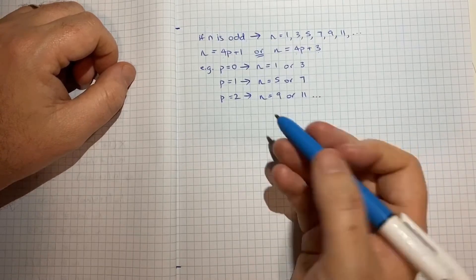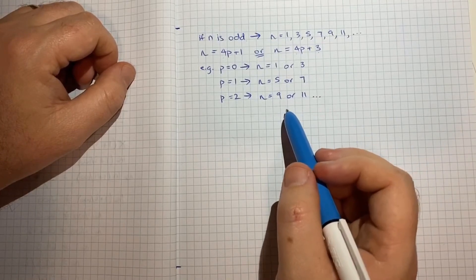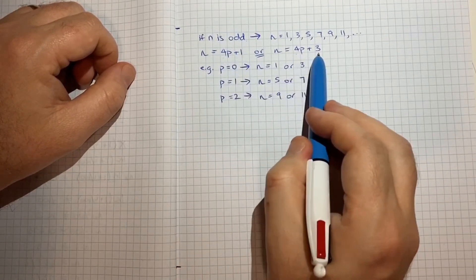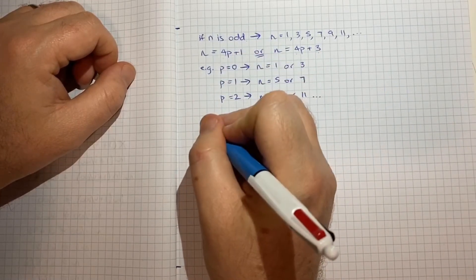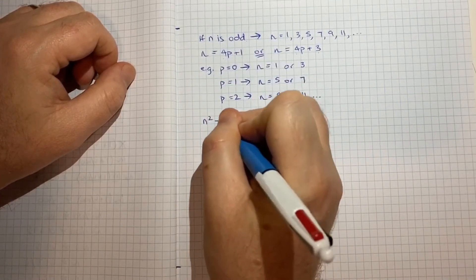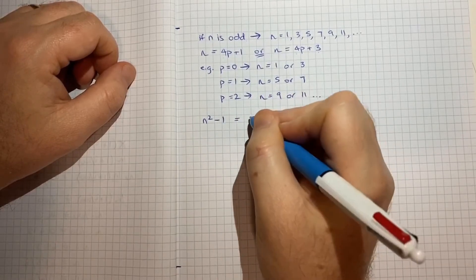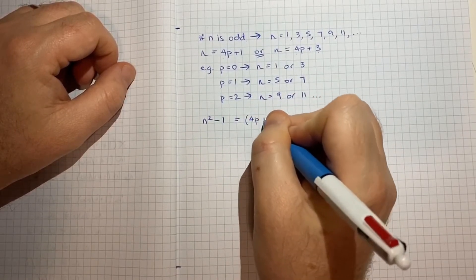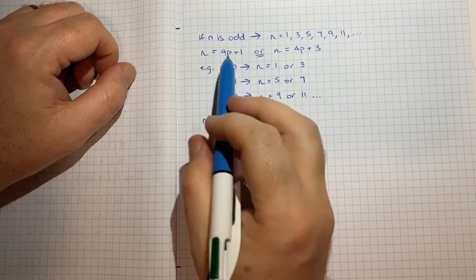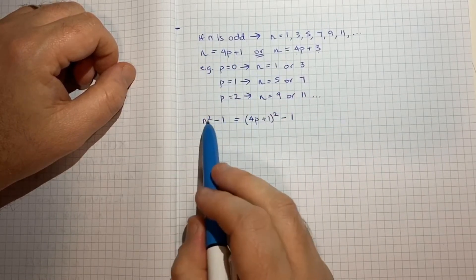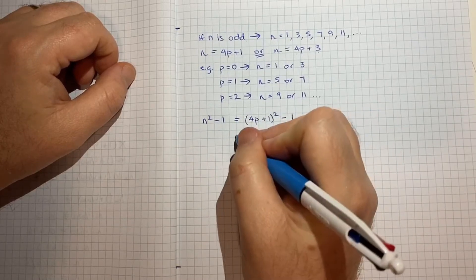So what we can do now is we can evaluate n squared minus 1 by inserting each of these possible ways of representing n. So we can start by saying n squared minus 1 is equal to 4p plus 1 squared minus 1. So you see I've just taken n and inserted it there and then we can expand that.